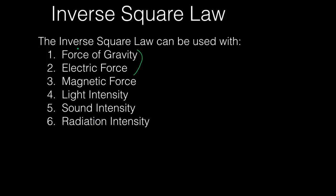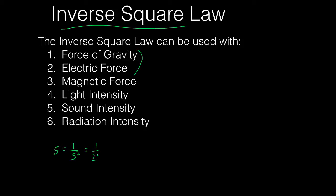To introduce the inverse square law, I'd like to go by the name — inverse square — and what it means. If we look at a number, say 5 for example, and you wanted to take the inverse square of 5, the inverse of 5 is 1 over 5. But don't forget we've got to square it. So the inverse square would be 1 over 5 squared, which is equal to 1 over 25.